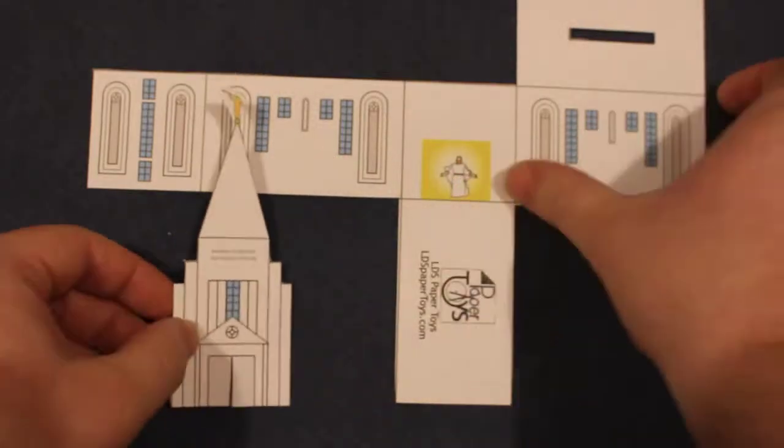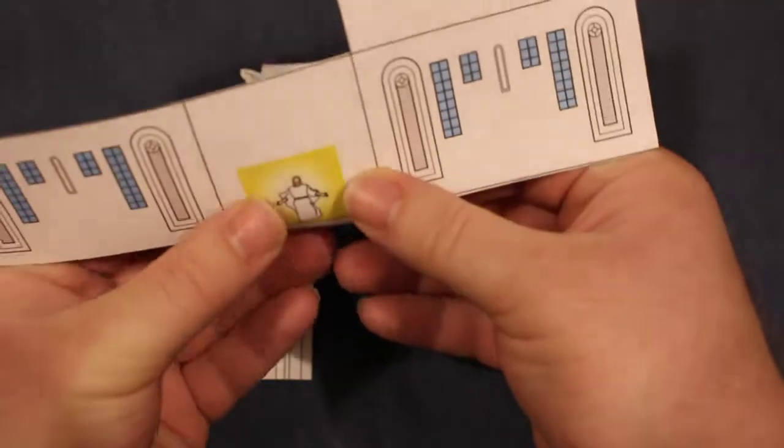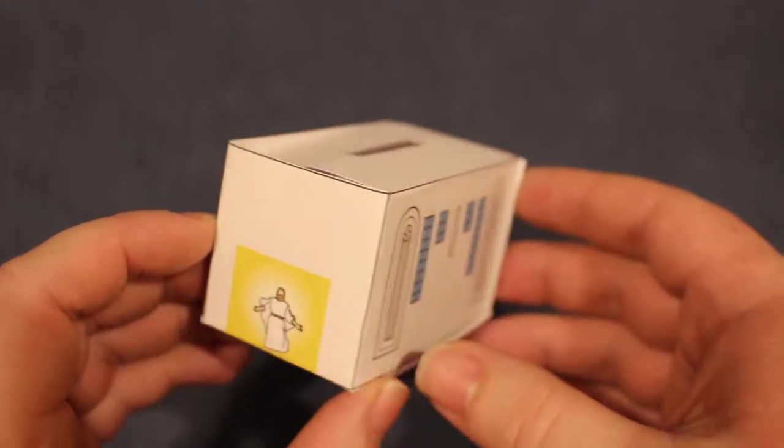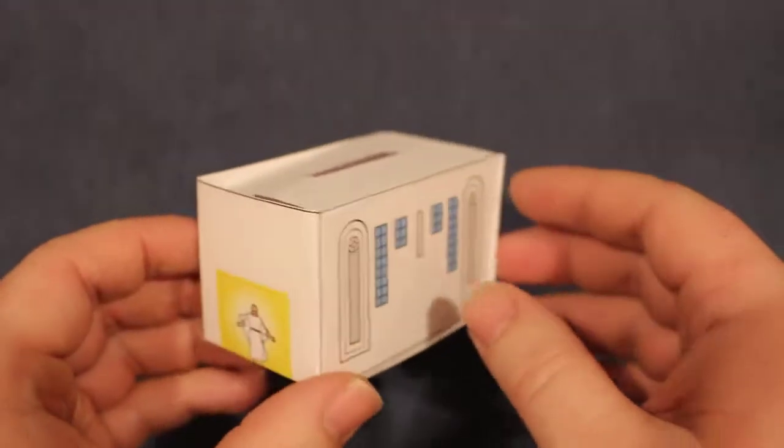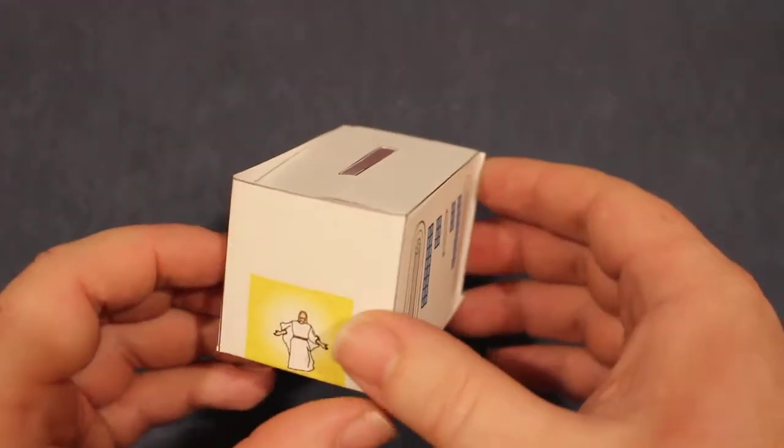So again from here you just fold this up just like we did before. So you fold that into this 3D shape. This will be on the front here. And tape that up. Of course you want to tape it up pretty secure. Again it's going to hold money.